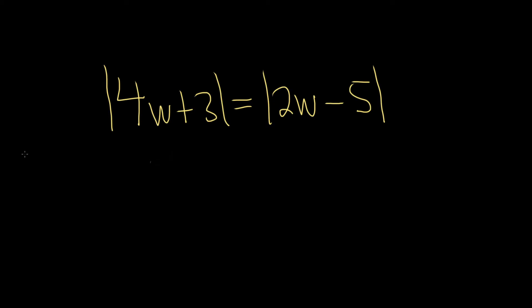So we'll drop the absolute value. So we have 4w plus 3 equals 2w minus 5. That's our first equation. That's the plus, right? There's no minus sign here. We just left it alone. And the other equation is 4w plus 3 equals minus, and then parentheses, 2w minus 5.